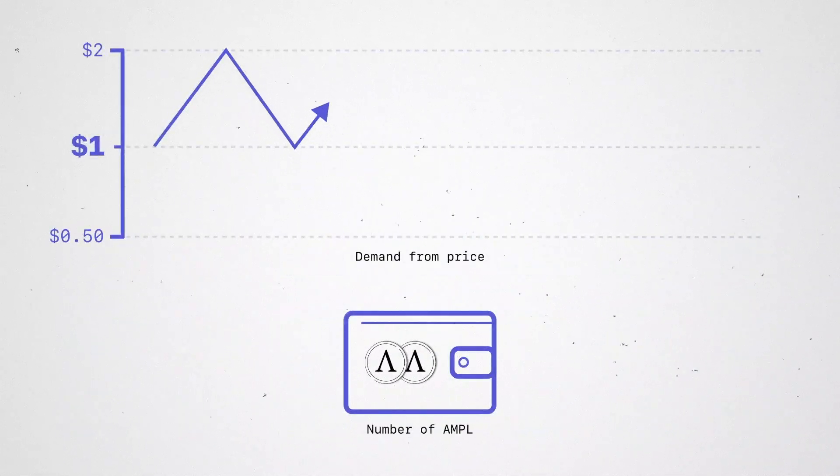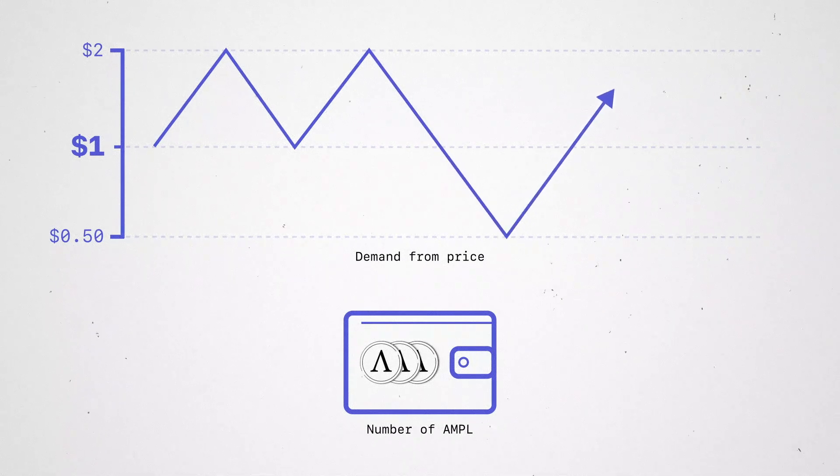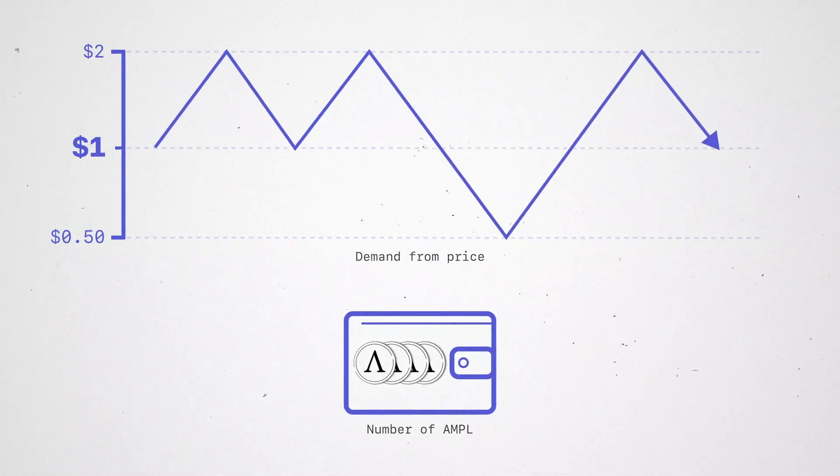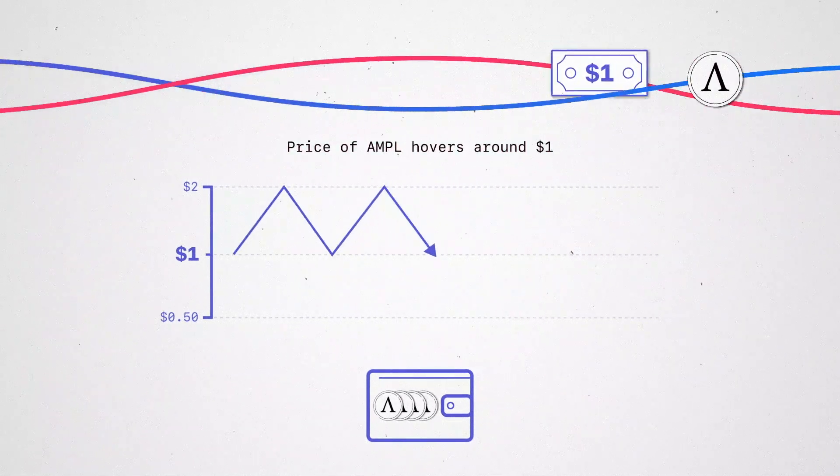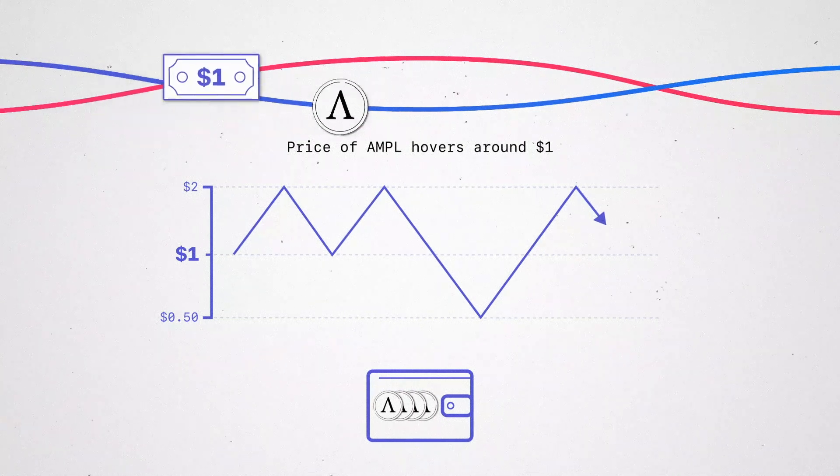This policy translates the volatility of demand from the price of Ample to the quantity of Ample tokens in your wallet. As a result, the price of Ample hovers around $1, while the number of Amples in user wallets changes based on demand.